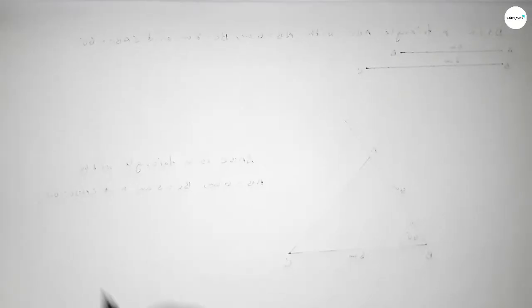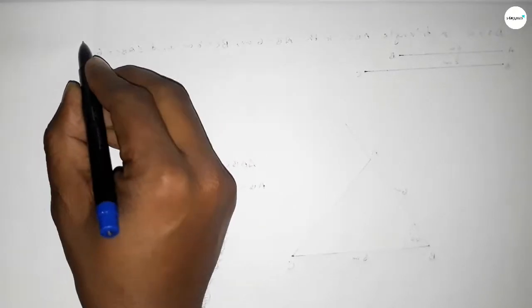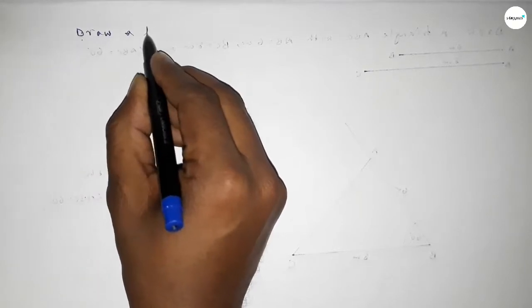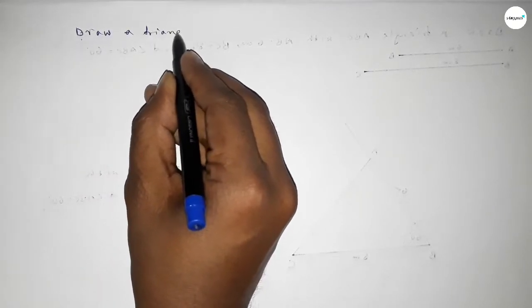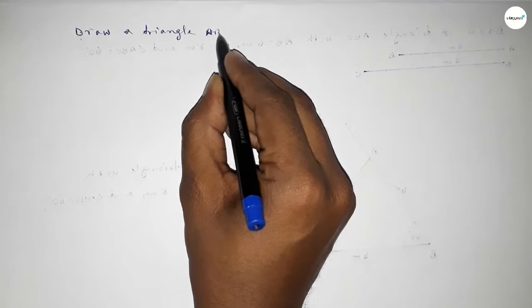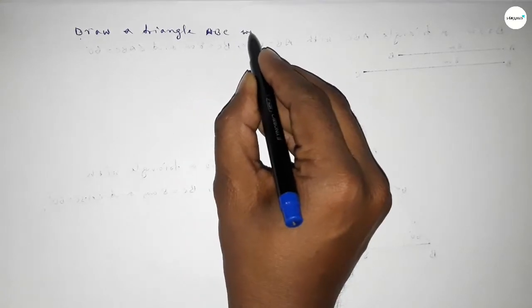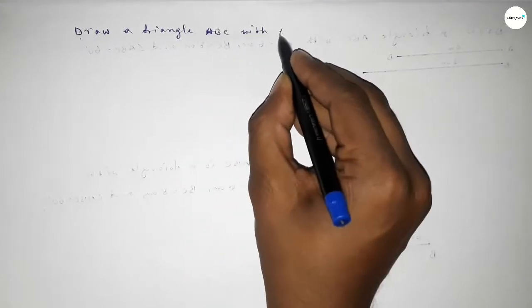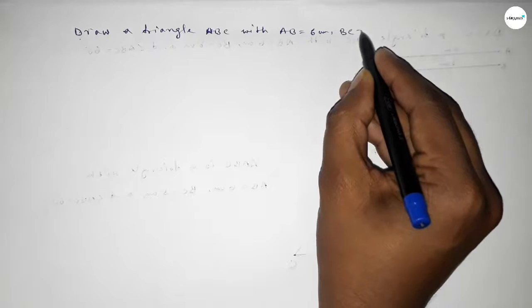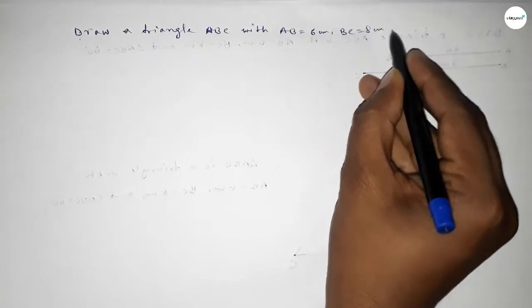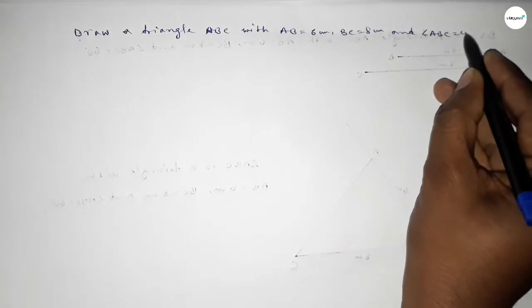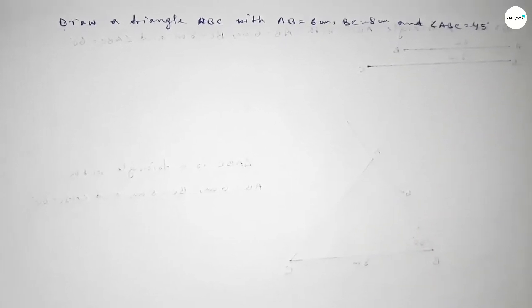Hi everyone, welcome to SI Share Classes. Today in this video we have to draw a triangle ABC with AB equal to 6 centimeter, BC equal to 8 centimeter, and angle ABC equal to 45 degrees. So let's start the video.